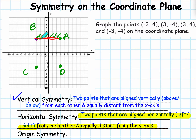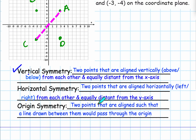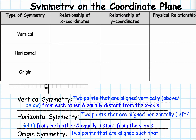The last type of symmetry we're going to discuss is origin symmetry, which has something to do with the origin. How you can know two points are symmetric with respect to the origin is that a line connecting the two points has to pass through the origin. Origin symmetry means we have two points aligned such that a line drawn between them would pass through the origin.